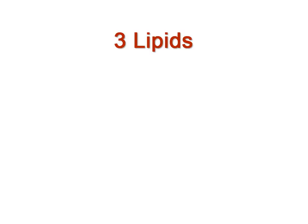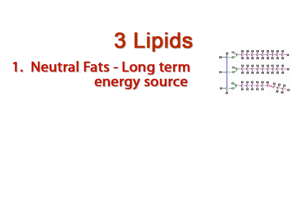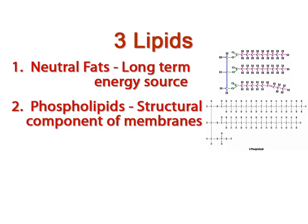To summarize, there are three lipids that you need to know. The neutral fats, that look like a capital letter E, and function as a long-term energy source. The phospholipids, that also look like a capital letter E but with a phosphate group on one of the rungs, and they function as a structural component of all cell membranes and membranous organelles within the cell.